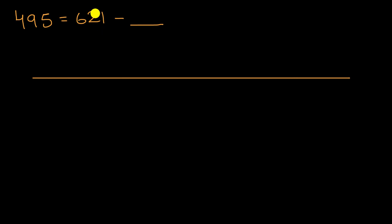So we're going to start at 621 and subtract blank to get to 495. If this is 621, we're going to subtract some amount to get to 495. So let's say this right over here is 495. Now what amount did we subtract?